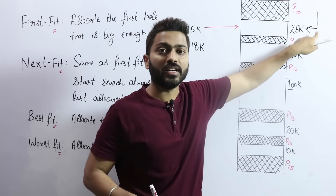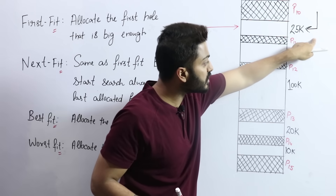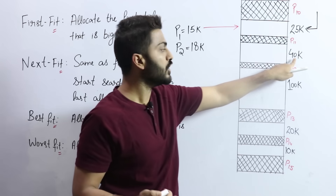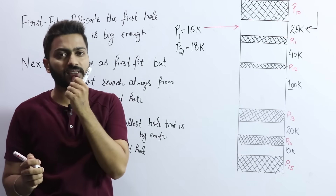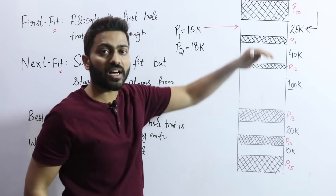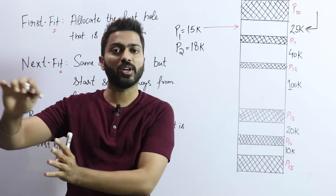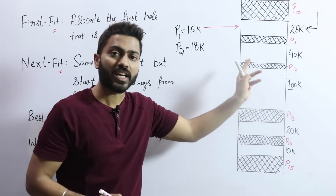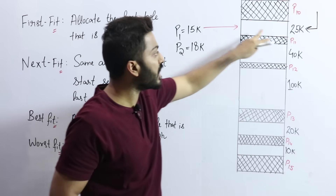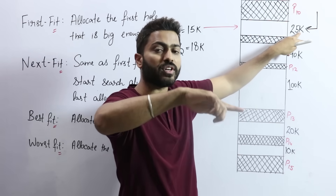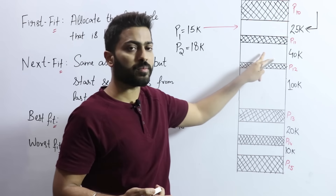For P2 of size 18KB, Next Fit will start searching from the last allocated location — not from the beginning. From the last pointer position, the next available hole is 40KB, which can easily accommodate 18KB. So P2 is allocated there. The advantage of Next Fit is that we don't need to search from the beginning again and again. From whichever hole was last allocated, we start searching for the next empty hole from that point onwards.